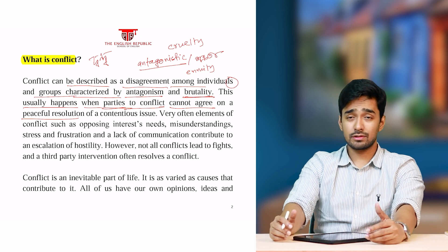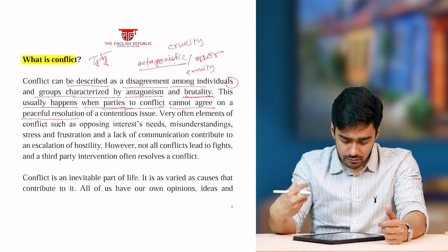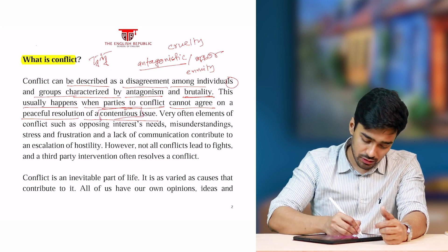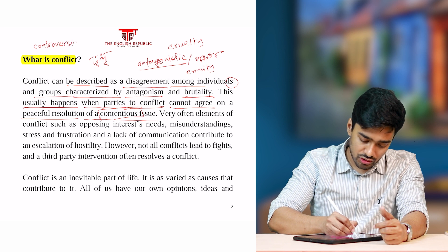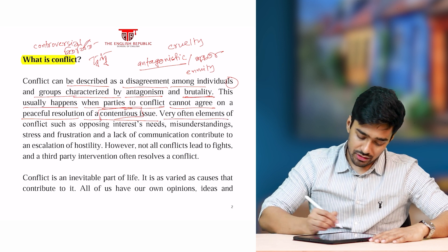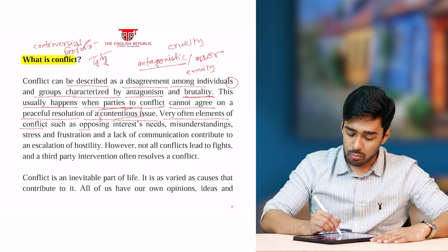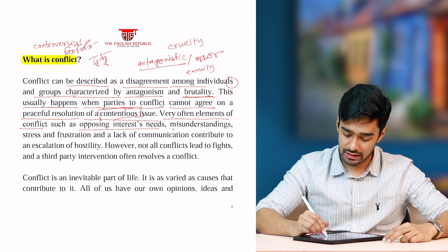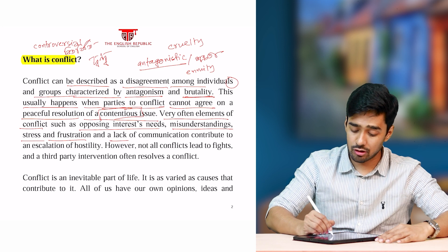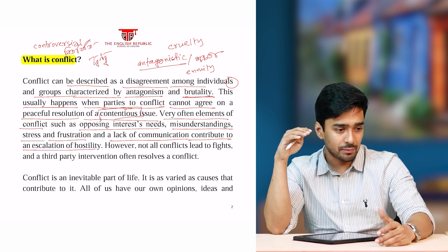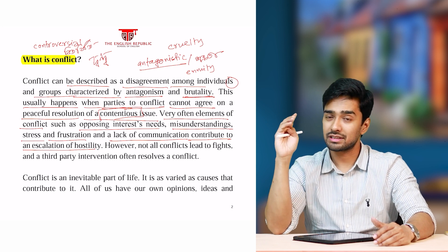This usually happens when parties in a conflict cannot agree on a peaceful resolution — resolution meaning a calm, considered decision or settlement. They cannot come to a peaceful resolution on a contentious issue. Contentious can be a synonym of controversial. Often, elements of conflict include opposing interests, needs, misunderstandings, stress, and frustration — and a lack of proper communication contributes to an escalation of hostility.